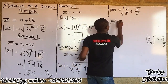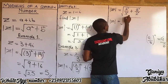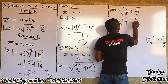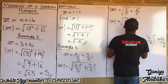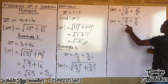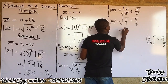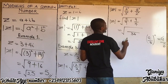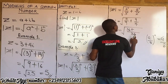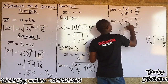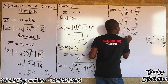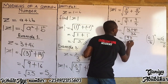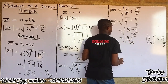The modulus equals the square root of four over nine plus nine over four. Taking the LCM which is 36: 36 divided by nine times four gives sixteen, and 36 divided by four times nine gives eighty-one. Adding sixteen plus eighty-one gives 97, so the expression becomes the square root of 97 over 36.